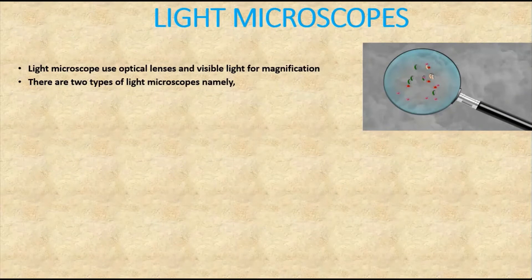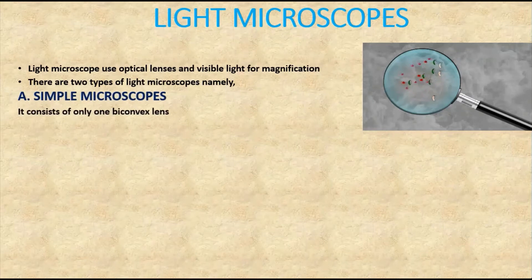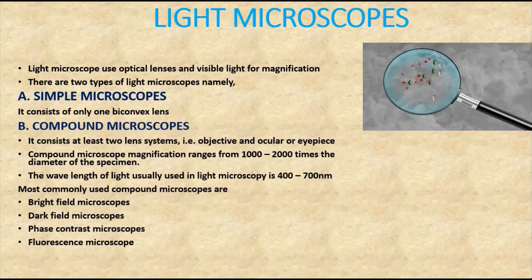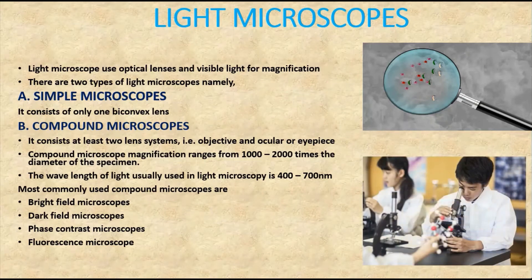Coming to the first one — the light microscope — these use optical lenses and visible light for magnification. Light microscopes are again classified into two types depending upon the number of optical lenses: the first one is the simple microscope and the second one is the compound microscope.